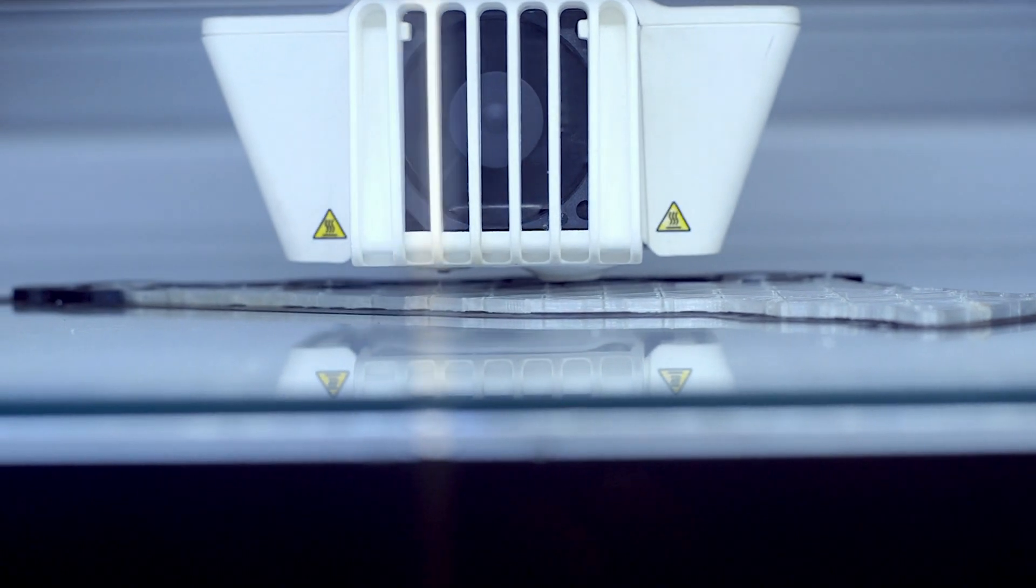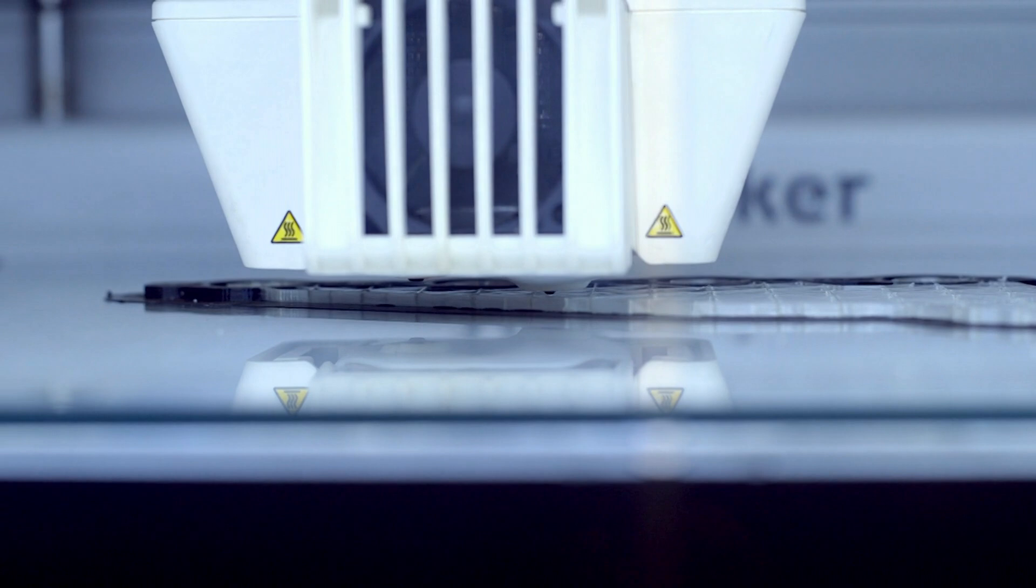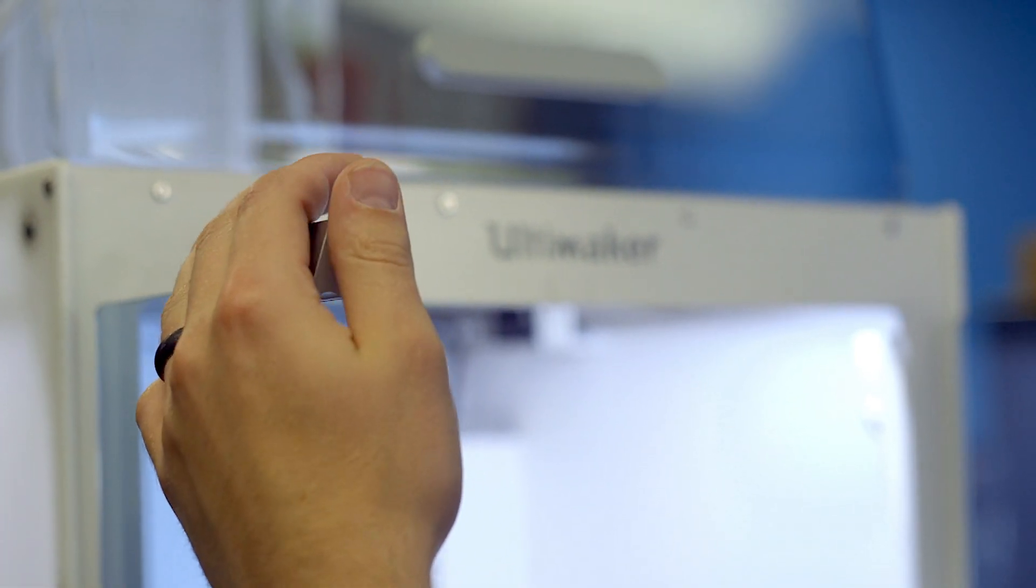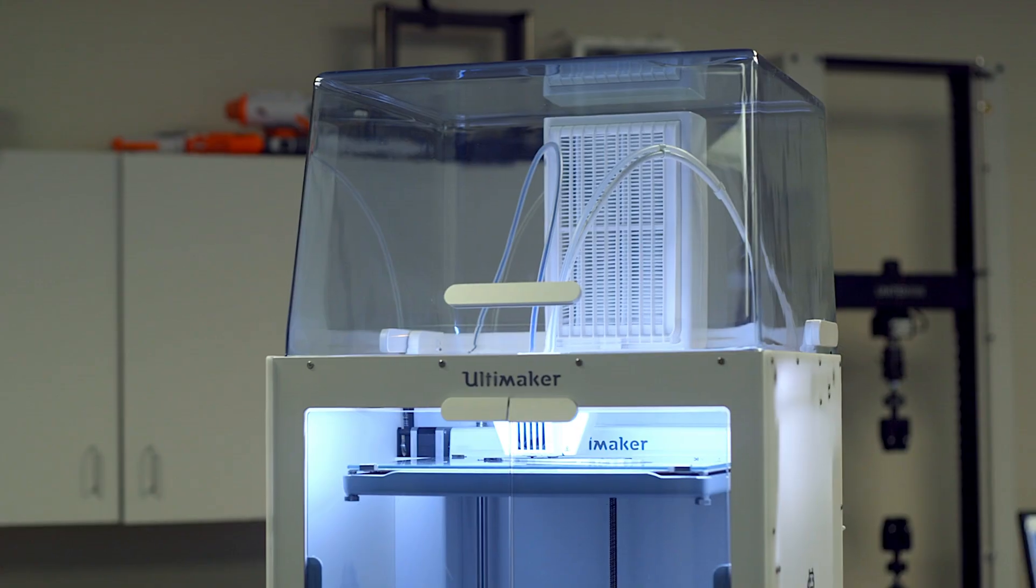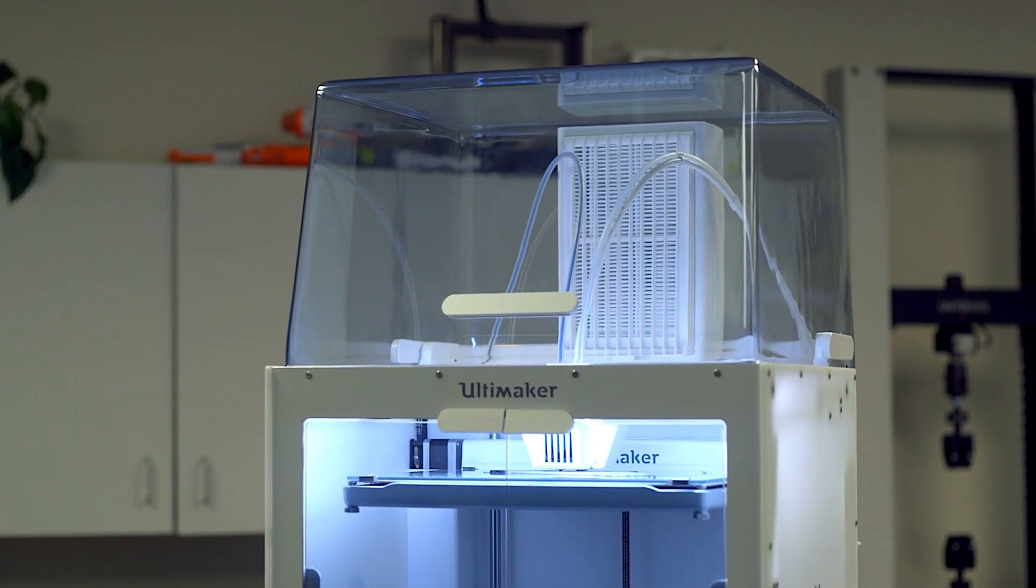Because this fully encloses the Ultimaker S5, printing with materials that are prone to lifting, delaminating, or warping becomes trivial. By fully enclosing it, hot air stays inside the 3D printer and drafty cold air currents stay out, creating a consistent temperature around the 3D print for a successful printing experience.